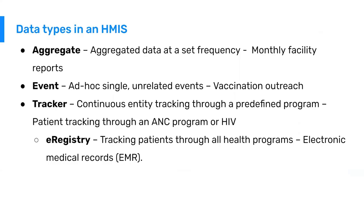What types of data do we have in an HMIS? Essentially, we have three main categories. First is aggregate data. Aggregated data is data that is compiled from clinical services or captured over a period of time and summed at the end of a certain frequency, say monthly, and that is the value that is submitted.